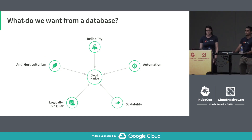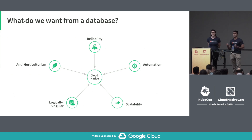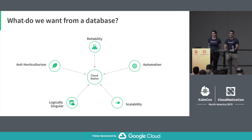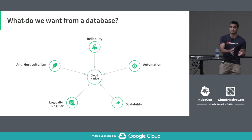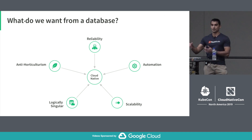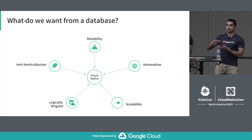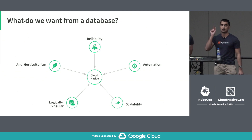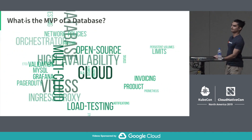So we get to anti-horticulturism. You're all familiar with the pets versus cattle analogy — you don't want to tend to pets, you want to treat your infrastructure as cattle. It's 2019, so we have a plant-based analogy now. Think of gardens versus row crops. With a garden, you have your little tomato plant that you care for and tend to. With row crops, you care about the overall performance of all your crops — everything can be deleted and brought up again at will and you don't care about any individual plant.